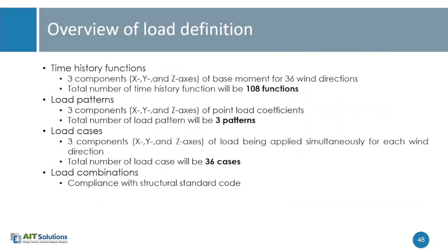To summarize how we do this in ETABS: we have three components of base moment for 36 wind directions. We rotate the model 10 degrees each time and repeat the experiment, giving 36 wind directions for one complete 360-degree cycle. For each of those 36 directions, we have base moment in x, base moment in y, and torsional moment about z — three time histories per direction. With 36 directions total, we actually have 108 time histories of base moments to work with.